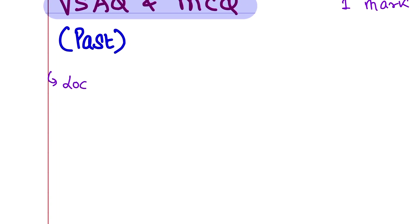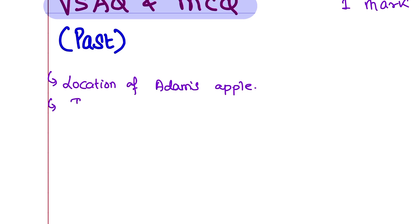Location of Adam's apple — Adam's apple is the thyroid cartilage present in the larynx. This is the prominence of Adam's apple in the male body. Other types of respiration: there are two types — aerobic respiration and anaerobic respiration.